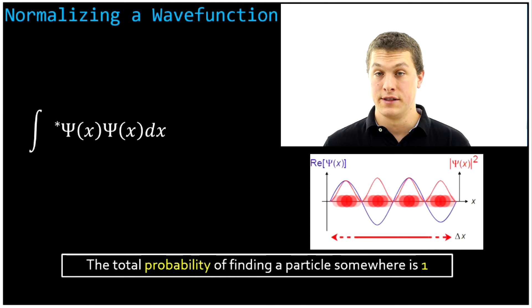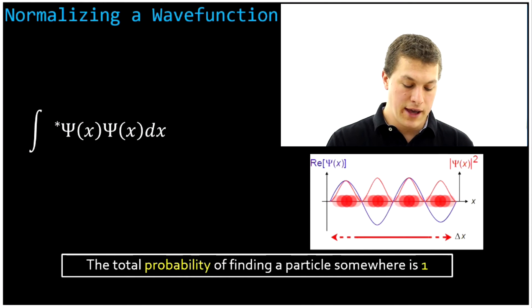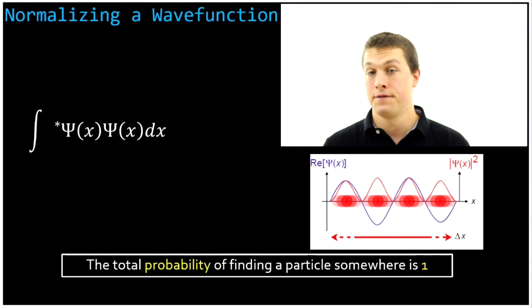So, how are we going to normalize these things? Well, what we're going to demand is that when we add up the chances of finding it over all the space where the wave function is defined, it has to be equal to 1. How are we going to add up the chances? Well, that's where we're going to use an integral.